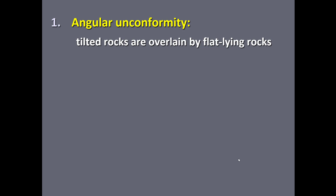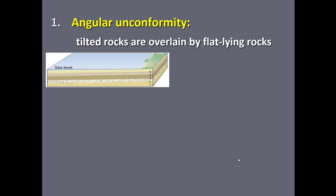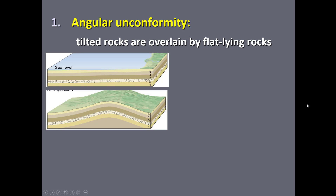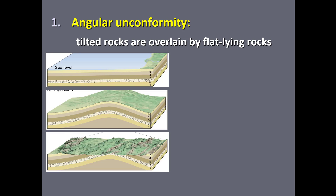Angular unconformities can be recognized when we find tilted sedimentary rock layers that are overlaid by flat-lying rock layers at a very different angle. To illustrate how one forms: we start with a typical marine environment with five layers of sedimentary rock deposited, oldest on the bottom, youngest on top, with sea level high. Then sea level drops and the rock layers are tilted upward. The highest elevations experience the fastest weathering, so we see erosion of the upper rock layers.